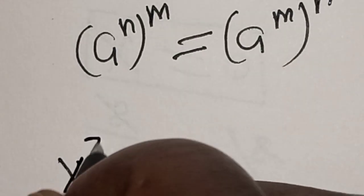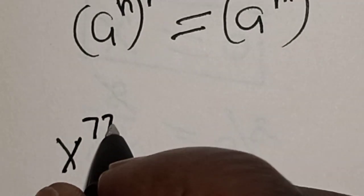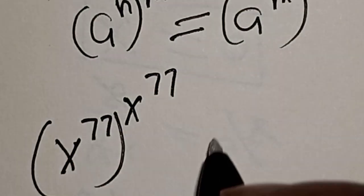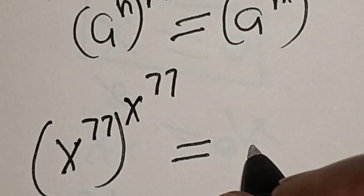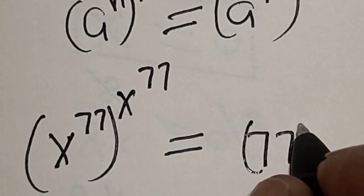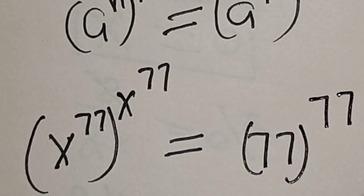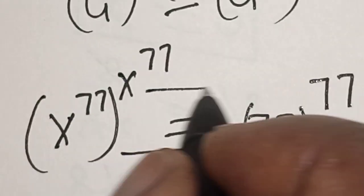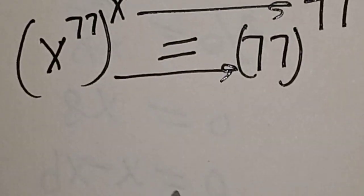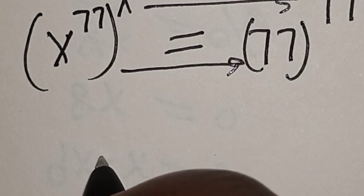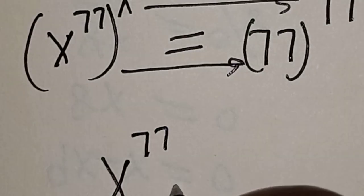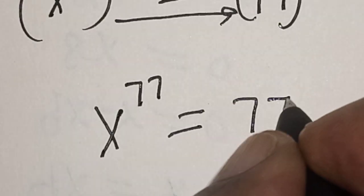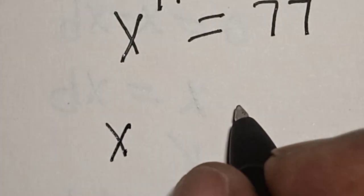So x raised to power 77 raised to power 77 is equal to 77 raised to power 77. Then by comparing this side to this side, x raised to power 77 is equal to 77.